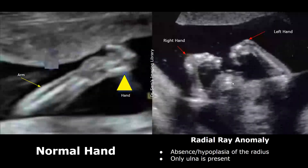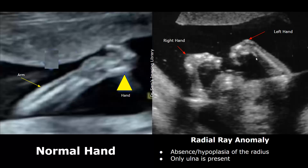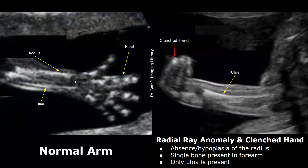Radial ray anomaly refers to absence or hypoplasia of the radius — the radius may be absent. In this image, along with clenched hands, we see absence of the radius with only one bone present in the forearm. Whereas in the normal image we will see two bones, the radius and ulna. This image shows radial ray anomaly and clenched hand, with only a single bone present in the forearm and an abnormal folded appearance of the hand. Usually the radius is absent when a single bone is seen in the forearm.